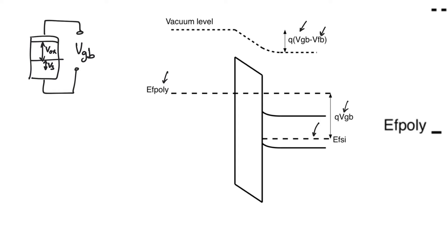When we add an external potential, it's going to add to or subtract from this original bending. It's important to notice that the difference that shows up on the Fermi levels is always going to be equal to the externally applied potential, whereas the difference in the vacuum level does not necessarily reflect the applied external potential because the vacuum level is constant not in equilibrium, but in the flat band condition — and the flat band condition is not a condition of thermal equilibrium.